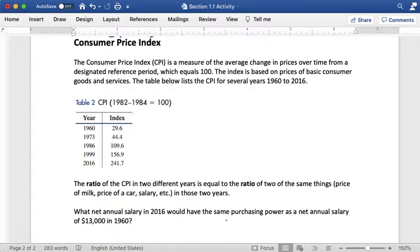We're going to be writing ratios. So our question that we're looking at is what net annual salary in 2016 would have the same purchasing power as a net annual salary of $13,000 in 1960.